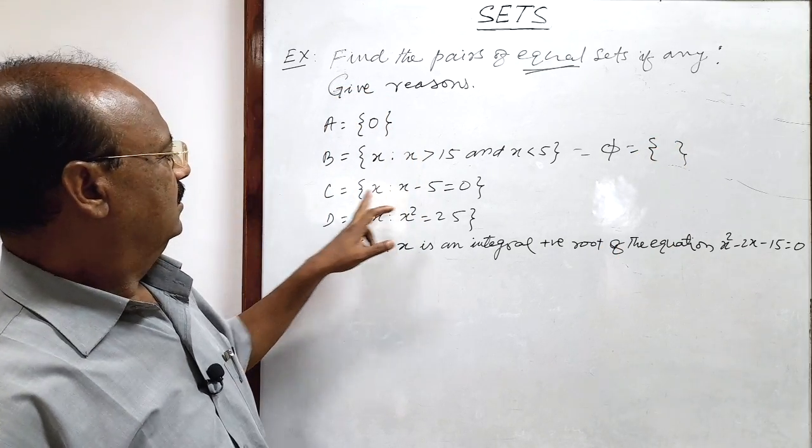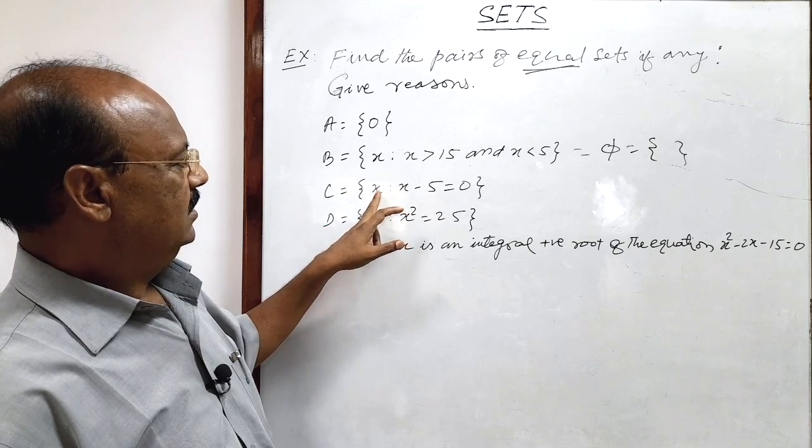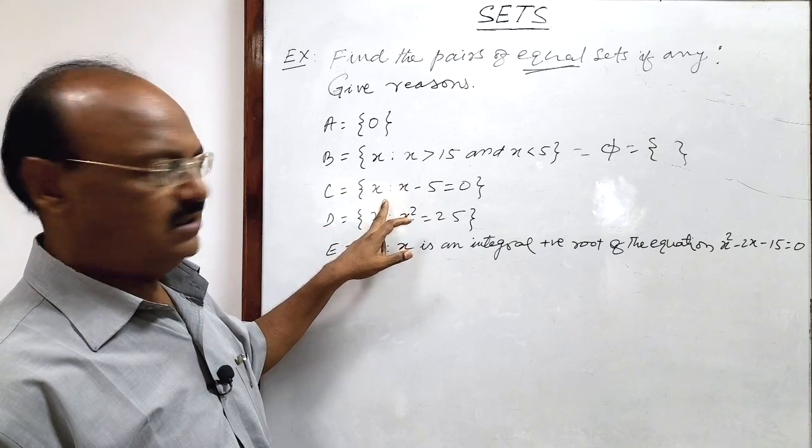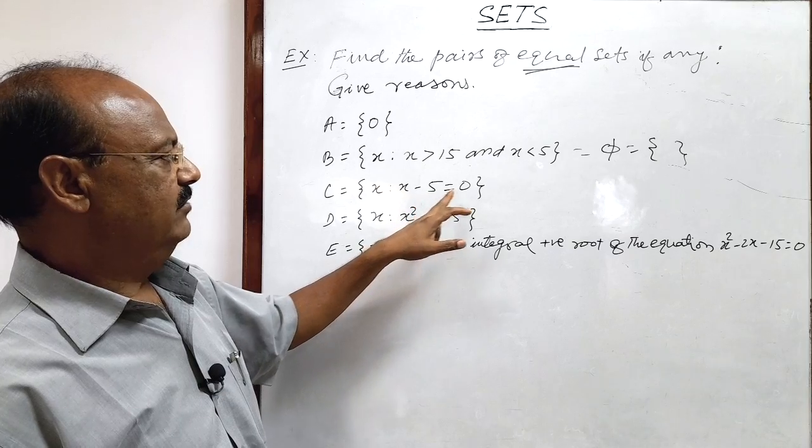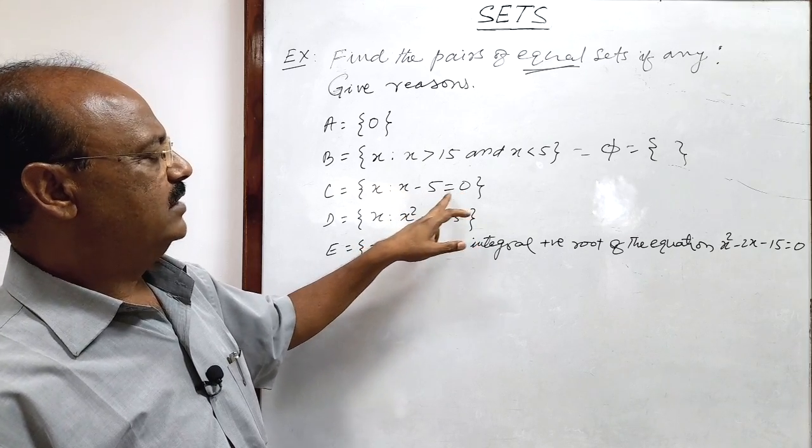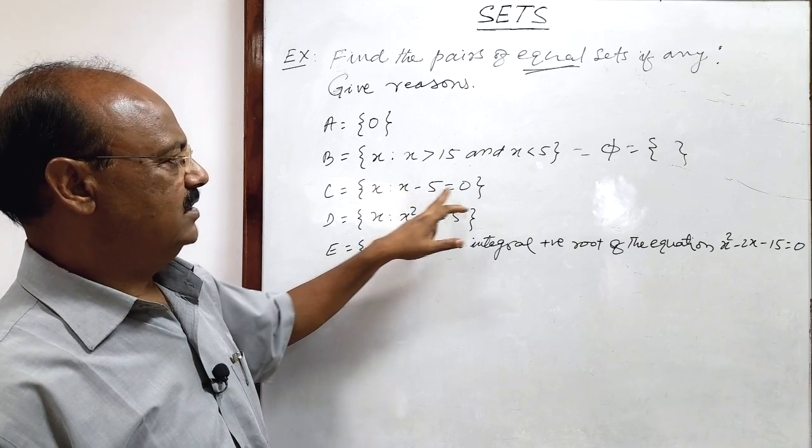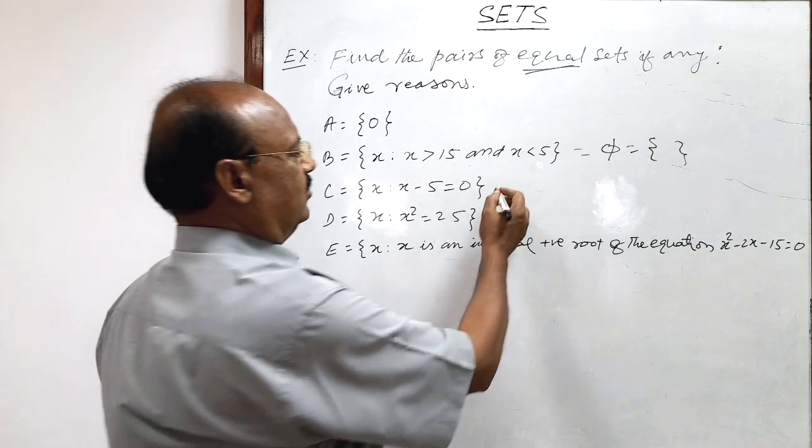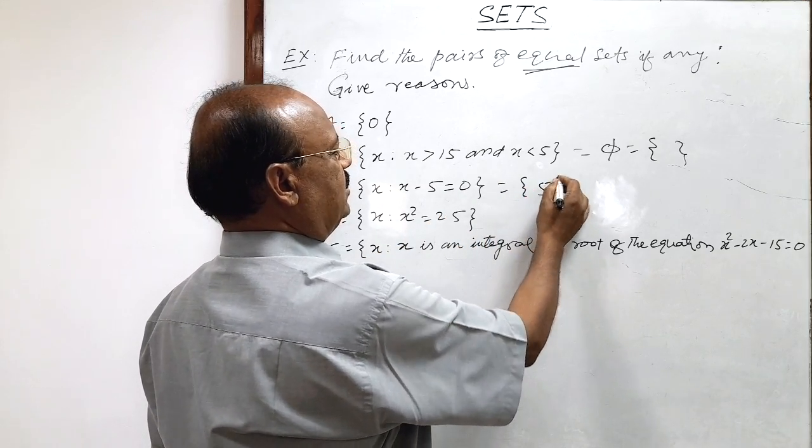And here set C consisting of elements x such that x minus 5 is equal to 0. So x minus 5 is equal to 0 means x is equal to 5. So this set will consist one element which is 5.